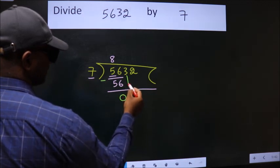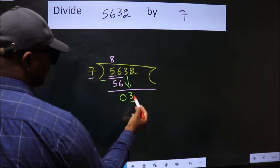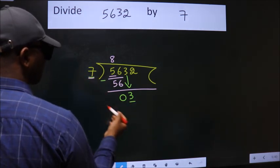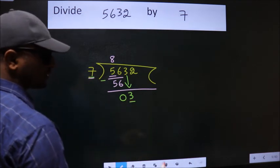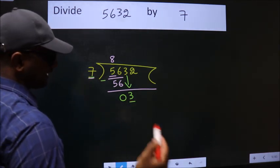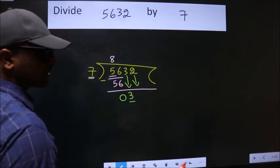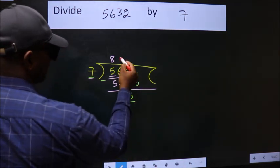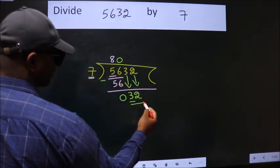After this, bring down the beside number. So, 3 down. Here we have 3. Here 7. 3 is smaller than 7, so we should bring down the second number. And the rule to bring down the second number is put 0 here. Then only we can bring down this number.